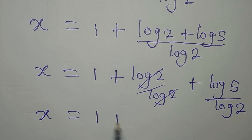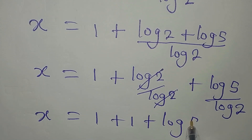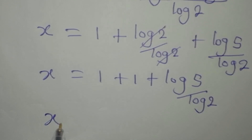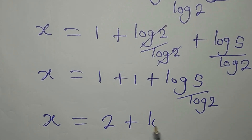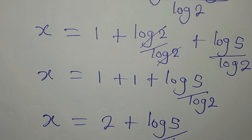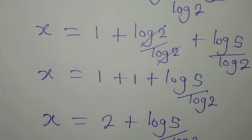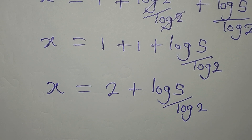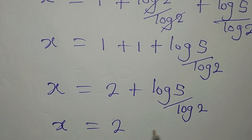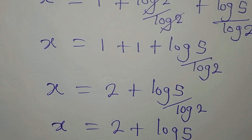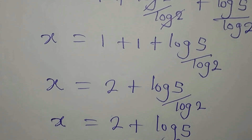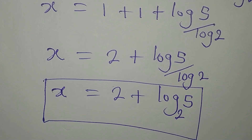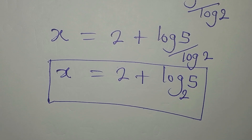So x equals 1 plus log 2 divided by log 2, plus log 5 divided by log 2. This simplifies to x equals 1 plus 1 plus log 5 over log 2, which is x equals 2 plus log 5 over log 2. Applying the change of base rule, the 2 in the denominator becomes the base, giving us x equals 2 plus log base 2 of 5.